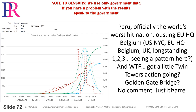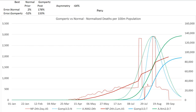Peru — officially the world's worst hit nation, ousting EU HQ Belgium, US, New York City, UK with a long-standing 123. Seeing a pattern here? And what — got a little twin towers action going? Golden Gate Bridge? No comment. It's just bizarre.